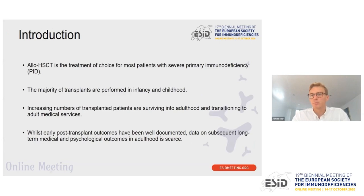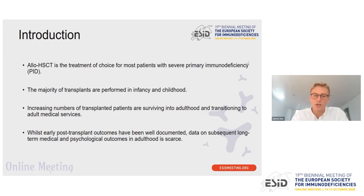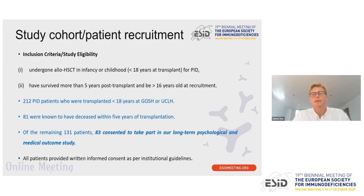Allogeneic HSCT is the treatment of choice for the vast majority of patients with severe primary immune deficiency disease, and most of these transplants take place in infancy or childhood. There are increasing numbers of patients transplanted who are surviving into adulthood and transitioning to adult services. It's particularly important to collect more data on long-term outcomes, both medical and psychological, as so far the early outcomes have been well documented but more long-term ones are few and far between. The inclusion criteria were: allogeneic HSCT in childhood for PID before age 18, survival more than five years post-transplant, and being older than 16 at time of recruitment.